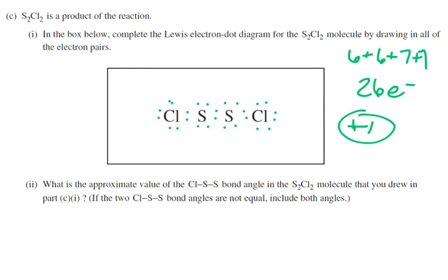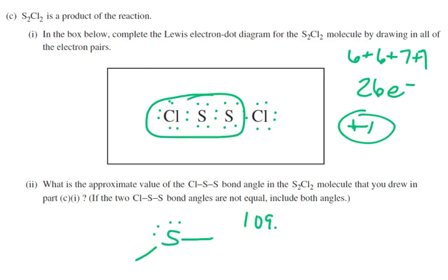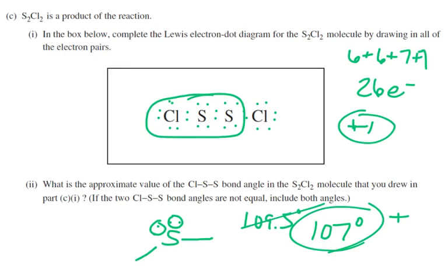What's the approximate value of the Cl–S–S bond angle? The sulfur in the middle has a single bond one way and a single bond the other way, plus two lone pairs. So it's going to be basically tetrahedral — ideally about 109.5 degrees. But those lone pairs repel a little more than the bonding pairs, so they squish it in. We'd expect something like 107 degrees. You get a point for any answer from 104 up to 110 degrees.